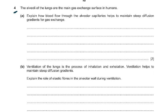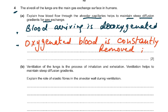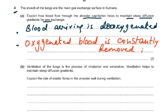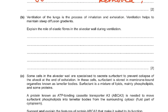Question number 4: The alveoli of the lungs are the main gas exchange surface in humans. Explain how blood flow through the alveolar capillaries helps to maintain a steep diffusion gradient for gas exchange. Blood arriving is deoxygenated and the newly oxygenated blood is continuously removed, so the diffusion gradient will be maintained.